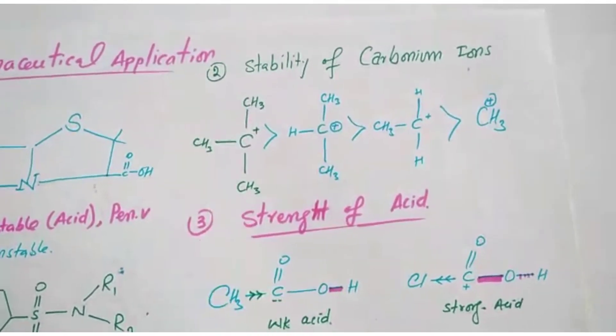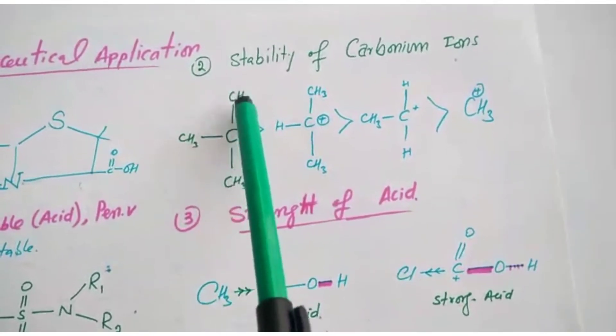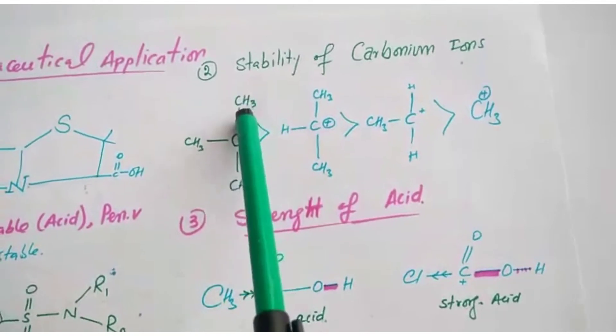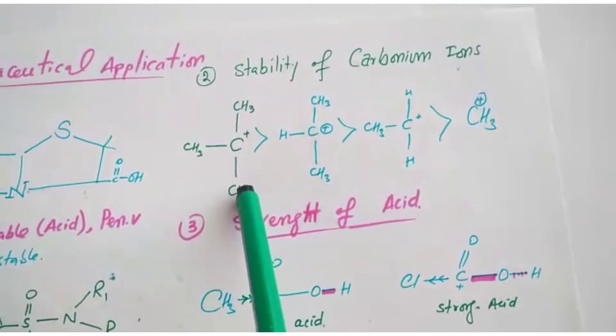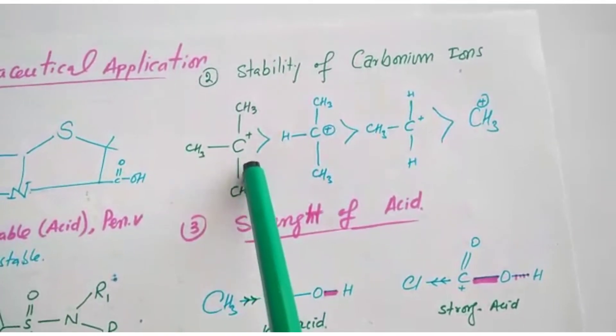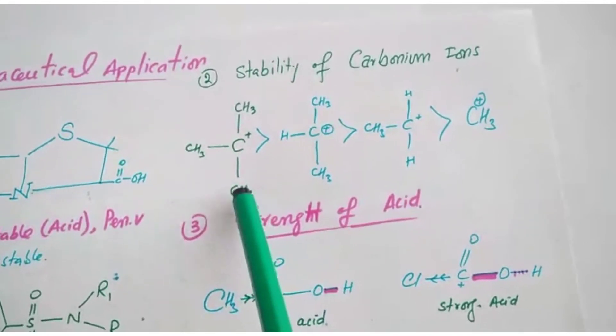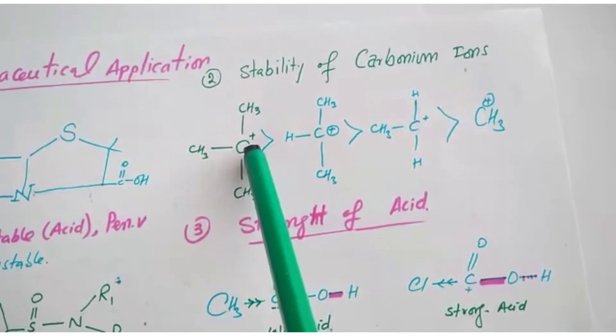This is donator, this is donator, this is donator. So due to the donation, the electron donating capacity of the CH3, this carbonium ion will be stable.